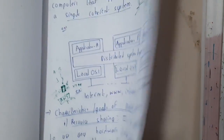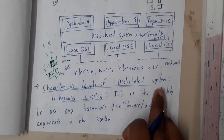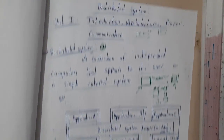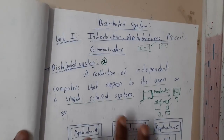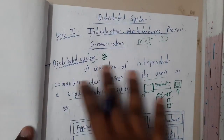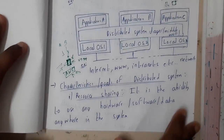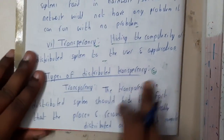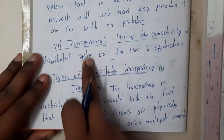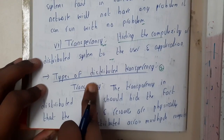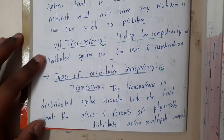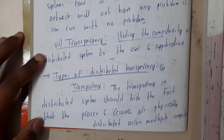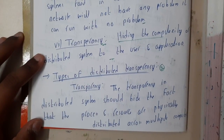Those are all the properties, characteristics, or goals of a distributed system. I hope everyone got a clear idea on distributed systems and their goals. In the next lecture we will be discussing the types of transparency. Thanks for watching.